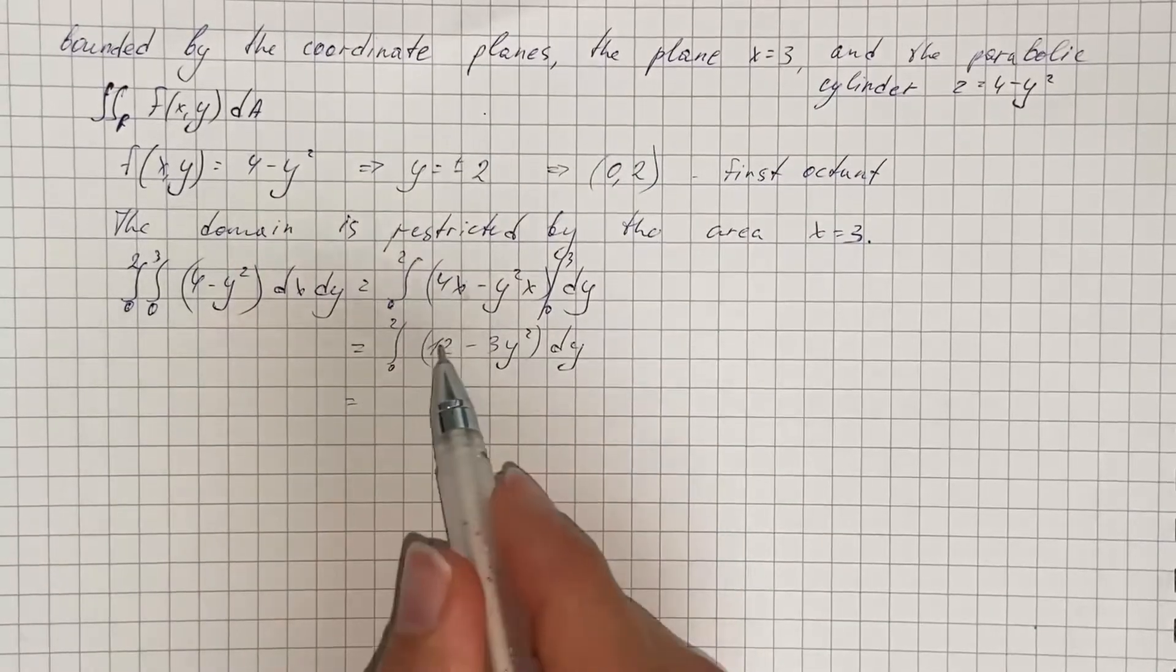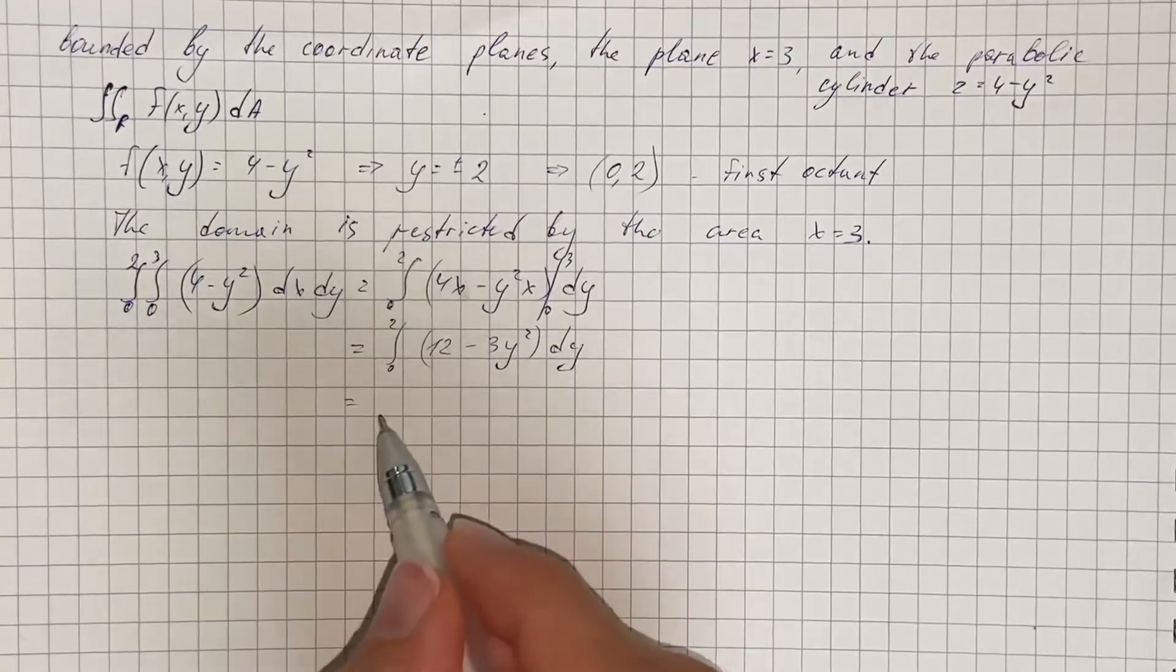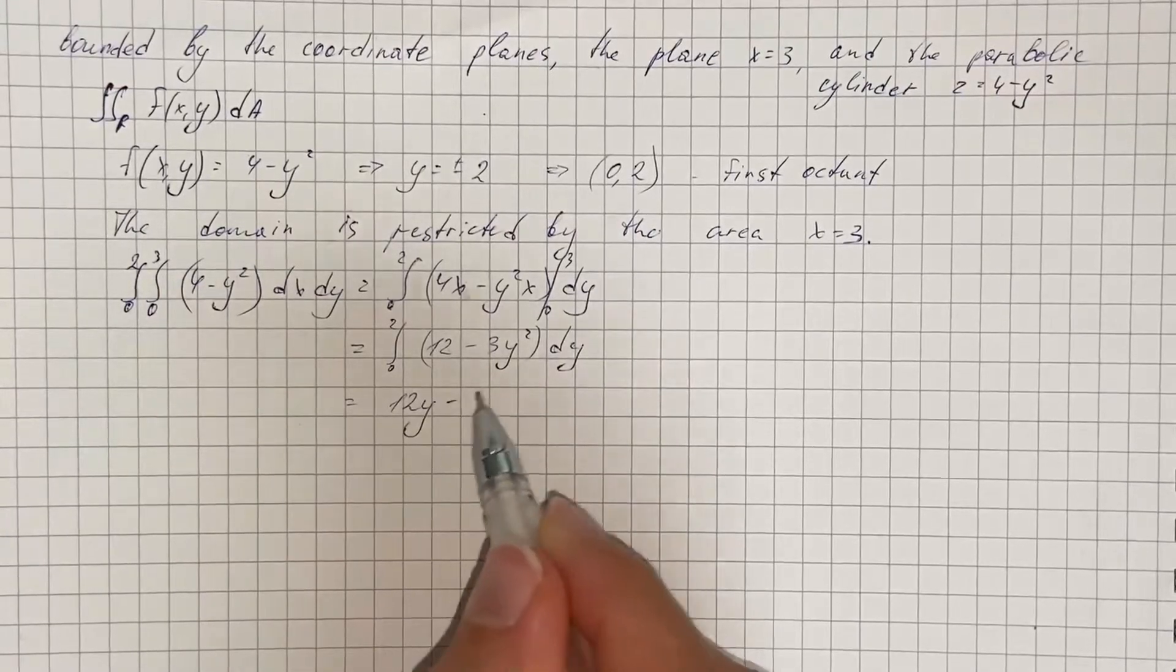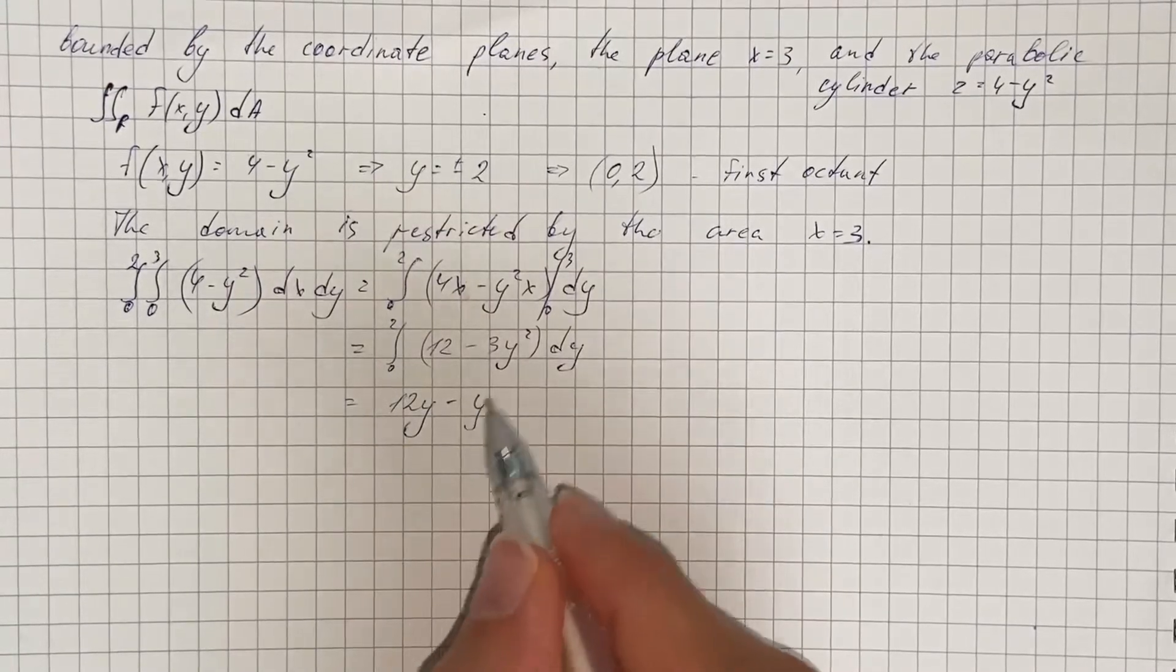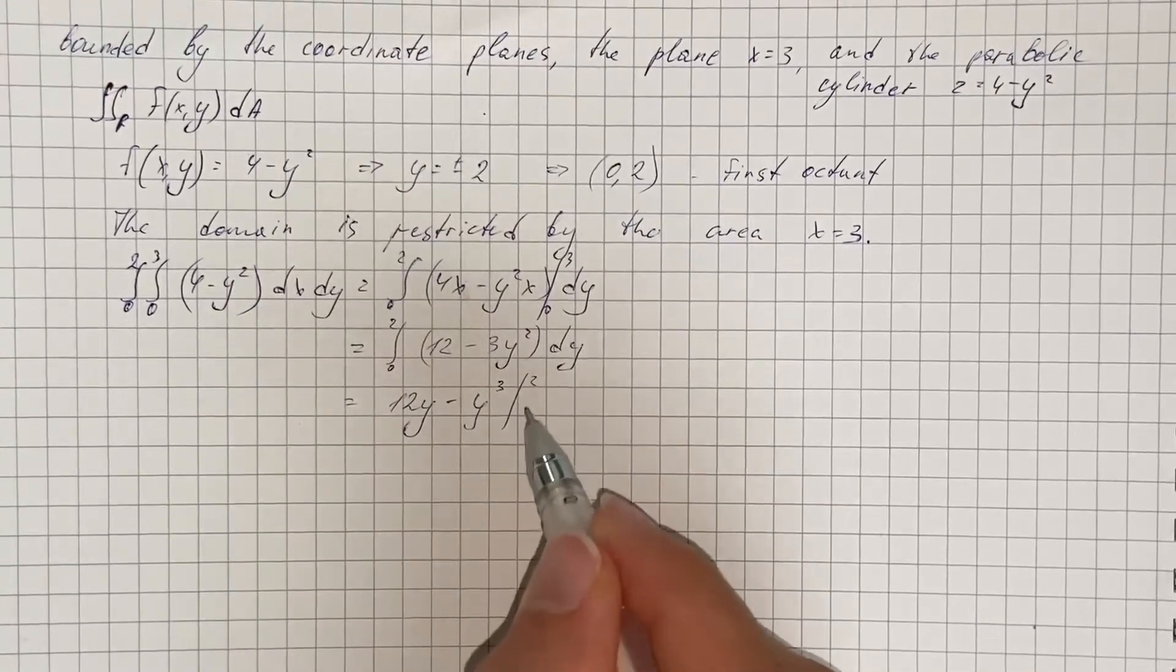So now we're going to integrate this function. And that's going to be 12y minus 3 times y cubed over 3. That's going to be y cubed. Evaluate it at 2 and 0.